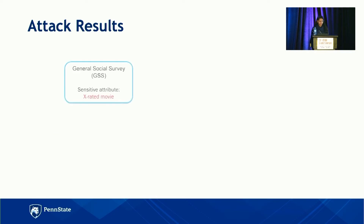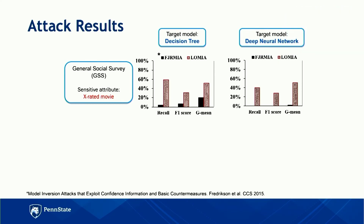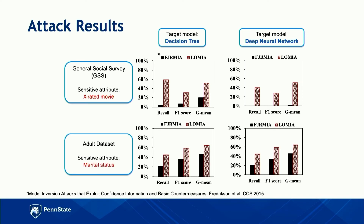Looking at the attack results — the paper has many results, so this is a concise version. For the General Social Survey dataset, where the sensitive attribute is whether individuals watched X-rated movies, we present results for both decision tree and deep neural network. Comparing our results with existing work, our attack is more stable when we change the type of model. The FJR-MIA existing attack didn't perform well when going to deep neural network models — it was evaluated on decision tree models. For the Adult dataset, where the sensitive attribute is marital status, our attacks also outperform the existing attack. We also have baseline attacks — random and naive — in our paper.